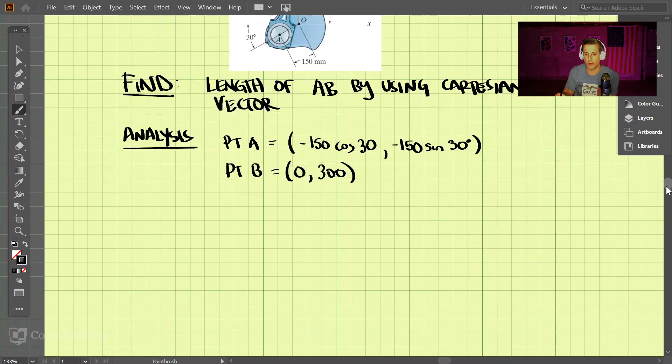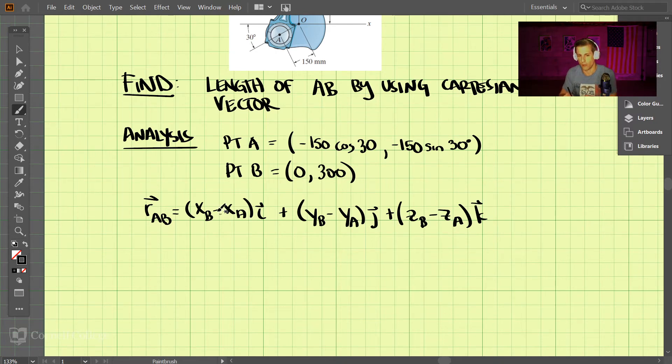Okay, so if you remember how to create a position vector, a position vector from A to B is going to be xB minus xA in the i direction, and then we have plus yB minus yA in the j direction, and then in the z direction we have zB minus zA in the k direction. So from A to B, we start with the ending point and we subtract the initial point, and that's the same way all the way through.